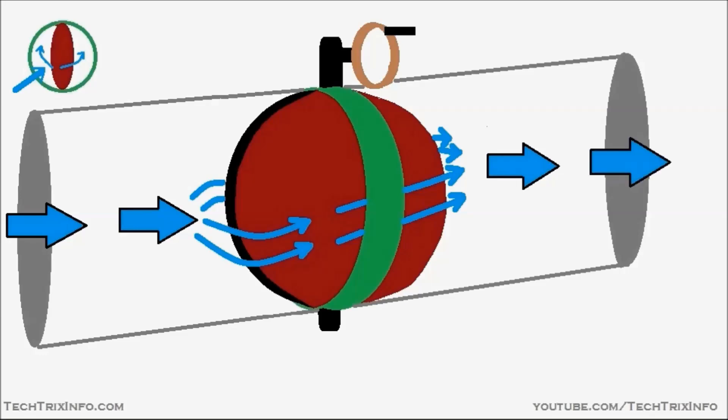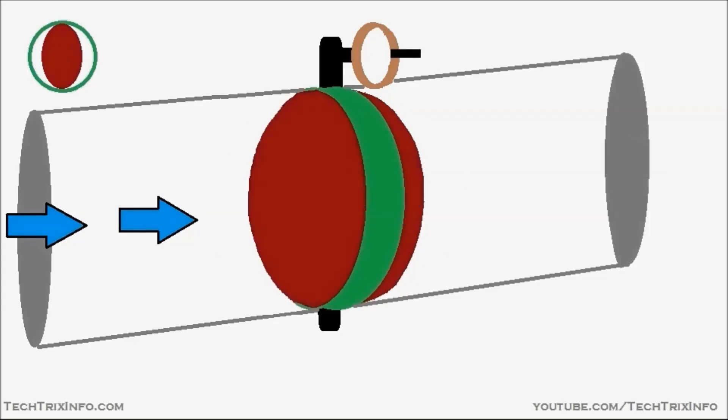Right now, the flow is happening. Now, what I'm doing, I'm slowly closing up the valve by rotating the operator. The valve is getting closed a little bit. So, there is a bit of restriction right now.